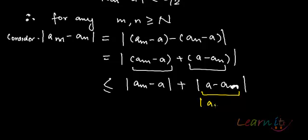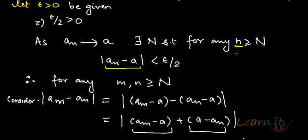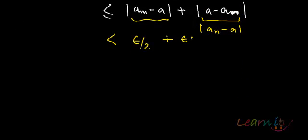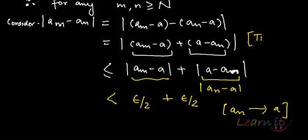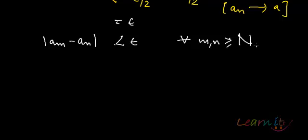We write it as |a_n minus a| or |a minus a_n| — it's the same thing in absolute value. This will be less than epsilon by 2 because a_n tends to a, and that holds for any m or n. By the same reasoning, the second term is also less than epsilon by 2 — by the triangle inequality of absolute value. So |a_m minus a_n| is less than epsilon for all m and n greater than or equal to N.